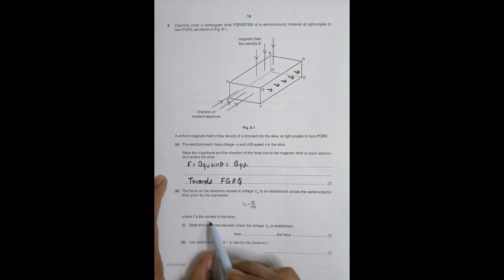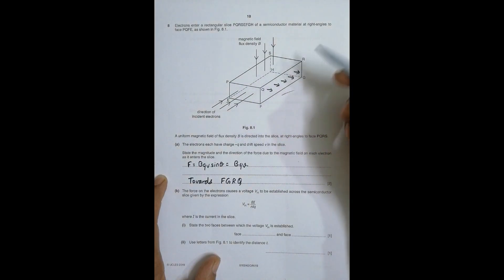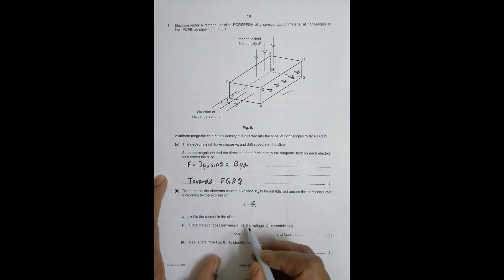State the two faces between which the voltage Vs is established. As we have said, the electrons move to this face, so negative charge will be accumulated here. So it should be negative and this thing will be comparatively positive. So the voltage should be between the faces EHSP and the next face is FGRQ.